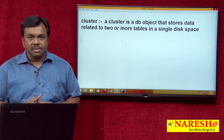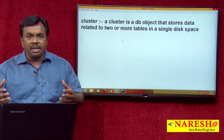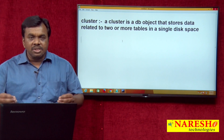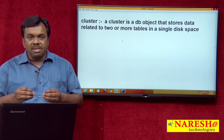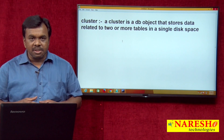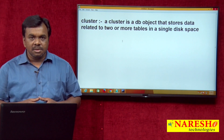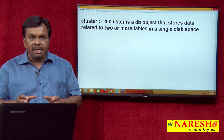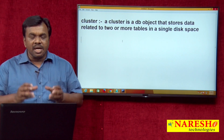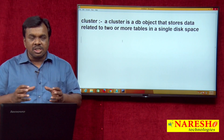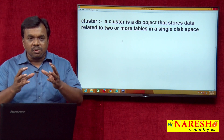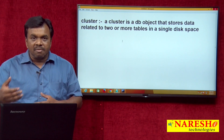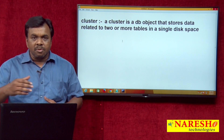But if we use a cluster, the tables which are frequently involved in join operations — better to cluster those tables. For example, there are two tables: EMP table and department table. These two tables are frequently involved in join operations, so better to cluster them so that both tables are stored in a single memory location, which reduces the number of I/O operations and improves performance.